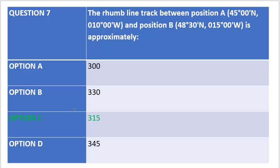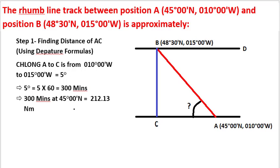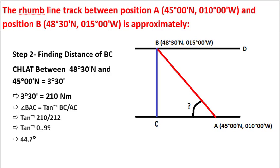Let us summarize the problem. Step 1: we found the distance AC using the departure formula. The change in longitude from A to C was 5 degrees, that is 15 minus 10 degrees. 5 degrees into 60 gave us 300 minutes, and 300 minutes at 45 degrees north, using 300 cos 45, gave us 212 nautical miles.